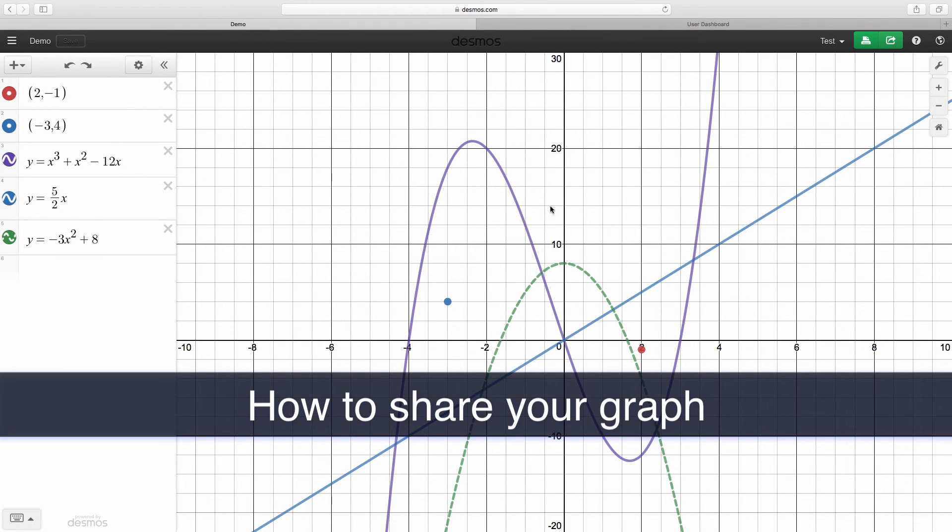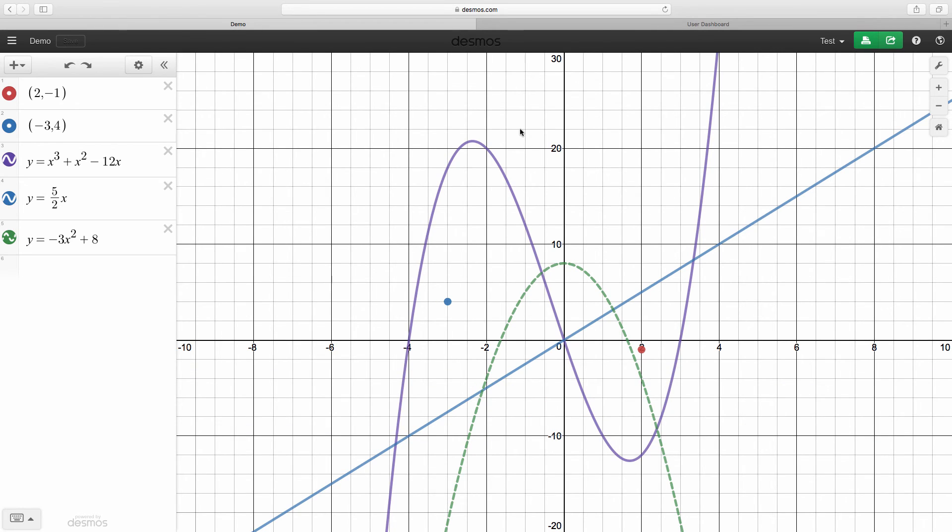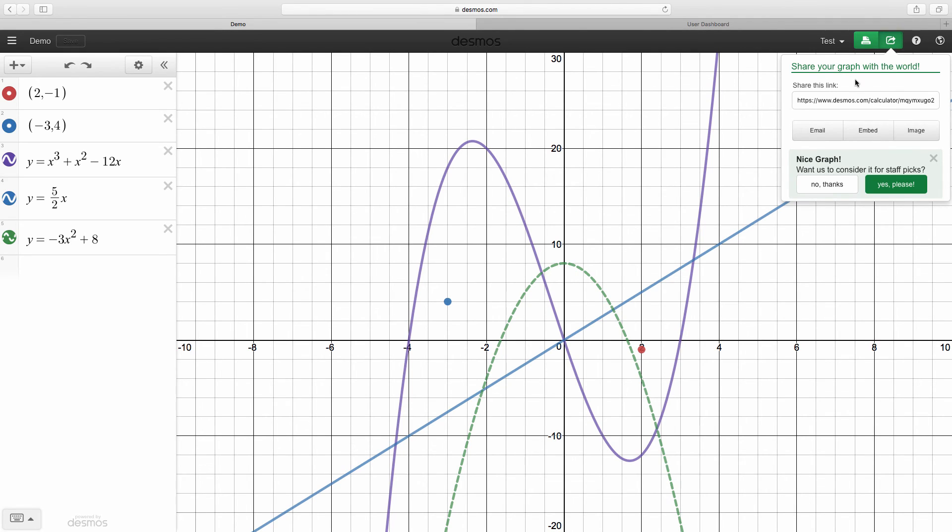So the last thing we're going to look at is how to share your graph. So maybe you need to send it as a submission to Canvas, which is what we're actually going to do now. Or you want to download your image and paste it into a document or something. You have some options to do that. So to share it, you're going to go up to the upper right hand corner of this green button here. One is print. The other one is share graph. So you click the share graph button and it's going to bring up some options for ways you can share it. So you can email it, embed it in something, download the image. But we're going to use this link, the share link. So if you copy this link, we're going to now use this link to submit our graph as an assignment in Canvas.